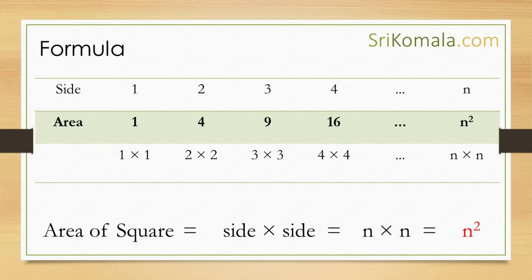Next, let us collect all the data up until this point into the following table. Using this data, we can extract the pattern of numbers which regulates the relation between the side of a square and the area of the square. Then, from the pattern of numbers, we find out that the area of a square is actually the multiplication of its 2 sides. In other words, the area of a square is side times side. This becomes the proof of the area of a square.